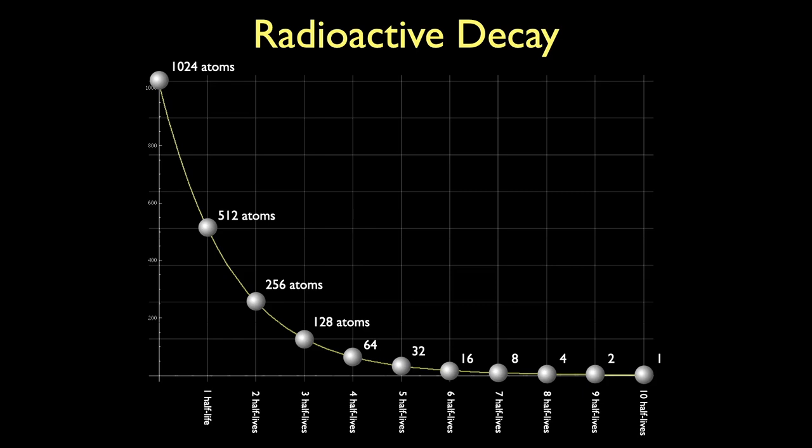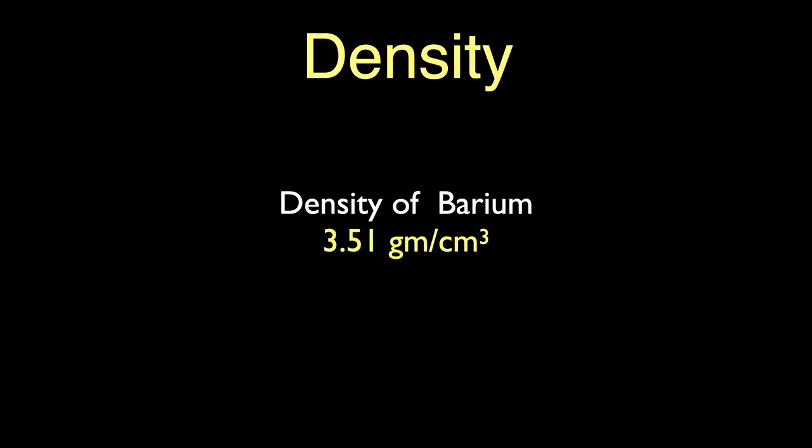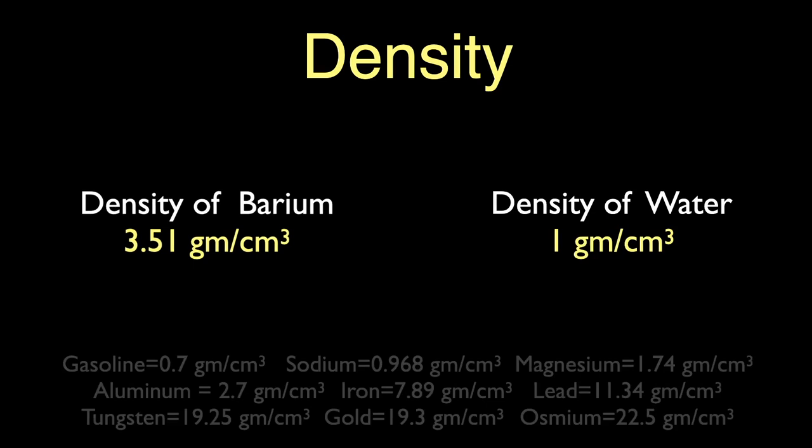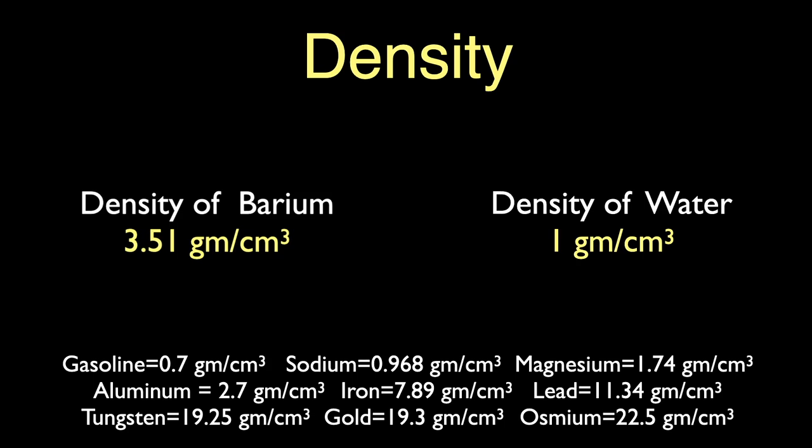Barium has a moderately low density at 3.51 grams per cubic centimeter. As a reminder, water has a density of 1 gram per cubic centimeter. As you can see on the chart, barium is denser than aluminum but only about half as dense as iron.